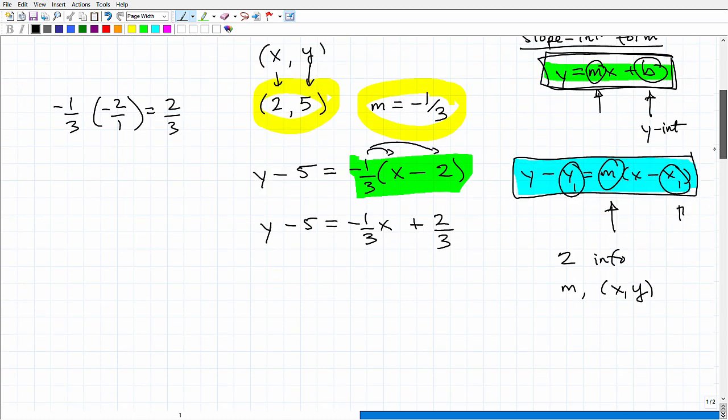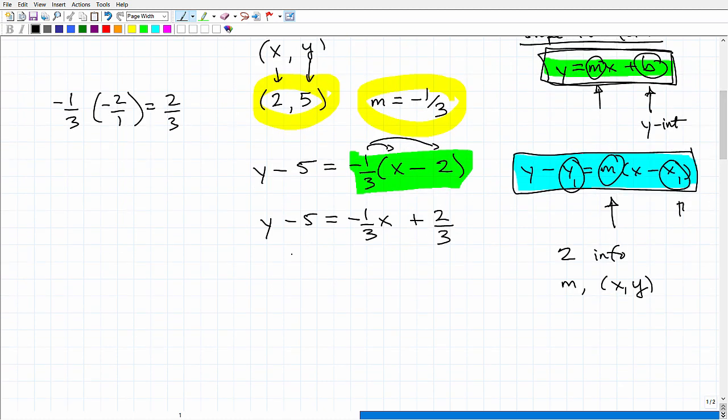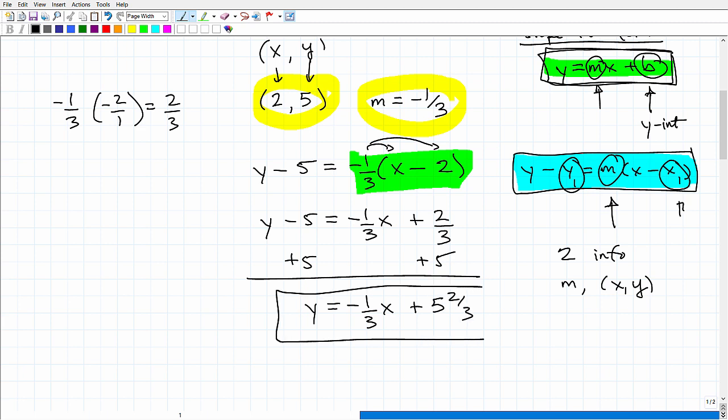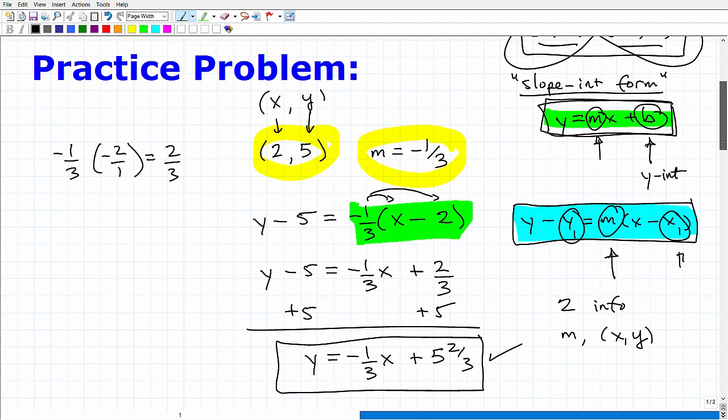And then what do I do here to finish this problem up? I got to add 5 to both sides of the equation. And I can have this as y is equal to negative 1 third x plus 2 thirds plus a 5 is going to be 5 and 2 thirds. I'll just leave that as a mixed fraction like so. And there you go. Okay, so that is my answer. Of course, I assume I hope, cross my fingers, I didn't make any errors. I don't think I have. But anyway, so that is a solution.